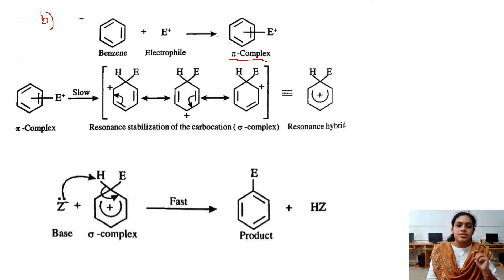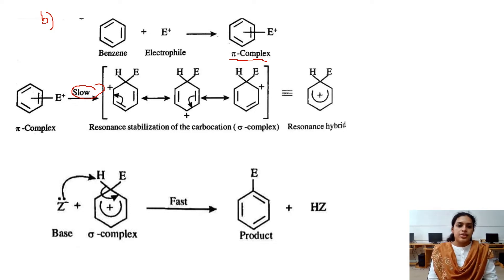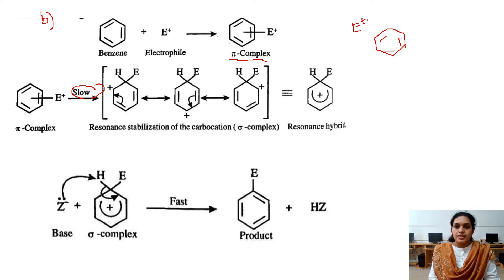Then the pi complex slowly converts into a sigma complex, meaning a sigma bond is established between the electrophile and one of the carbon atoms in the benzene ring. For example, with three double bonds present and E+ coming in, the electrophile gets attached to carbon 1 — numbering the ring 1 through 6.